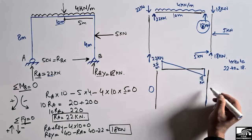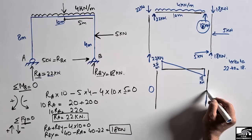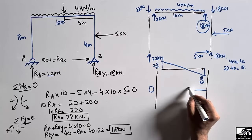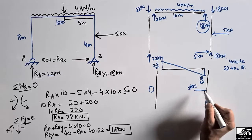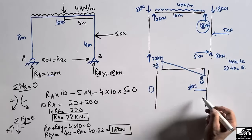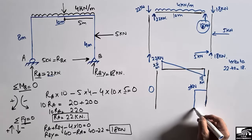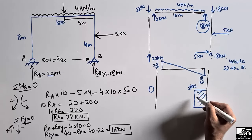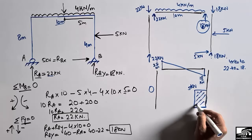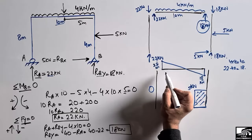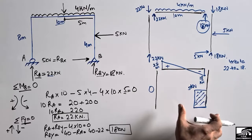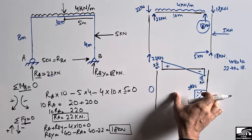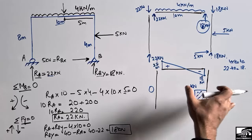For the column carrying the 5 kN horizontal load, the shear force is drawn at 5 kN. Since there is no further load on the remaining portion of the column, it is a straight line, closing to zero. The shear force diagram for this column has a magnitude of 5 kN — positive on one side and effectively zero below the load point.